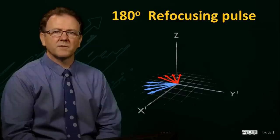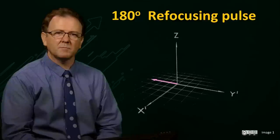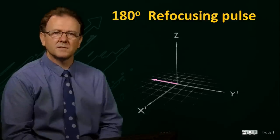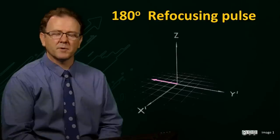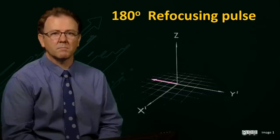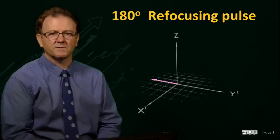After the pulse, the vectors then continue to precess around the z-axis, in the same direction as they were precessing prior to the pulse. This means that after another time period of tau, the vectors will reconverge, this time aligned along the minus-y prime axis. This process is called refocusing and reverses the dephasing.